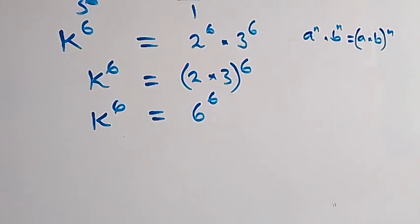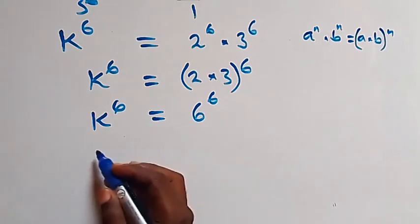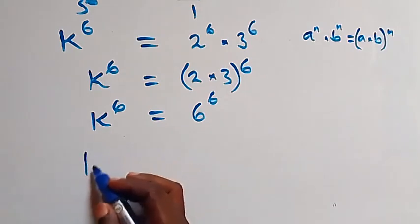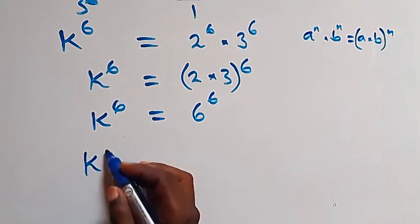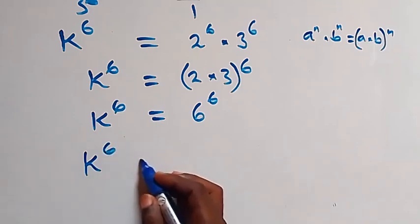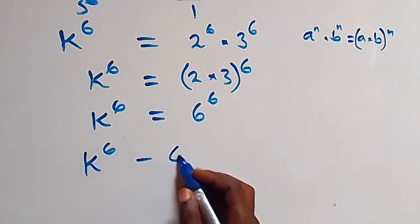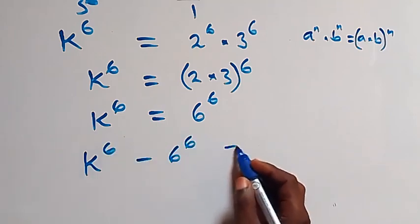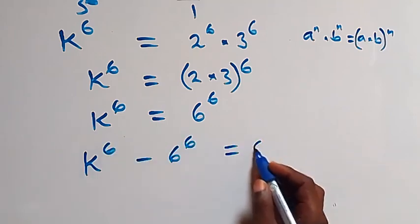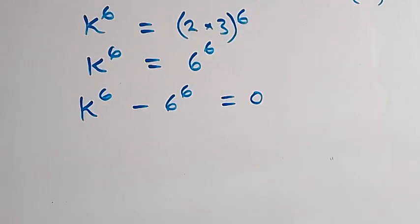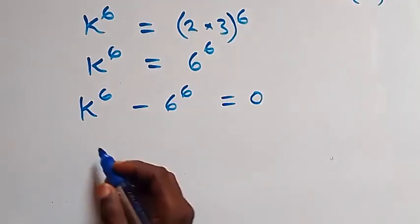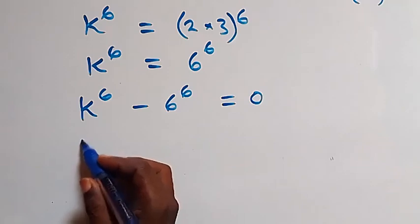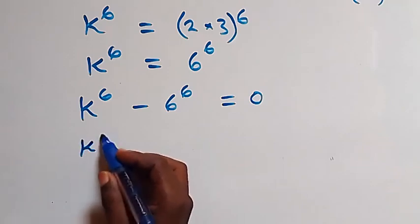That gives us k raised to power 6 equals 6 raised to power 6. Now we take 6 raised to power 6 to the left-hand side, giving us k raised to power 6 minus 6 raised to power 6 equals 0.